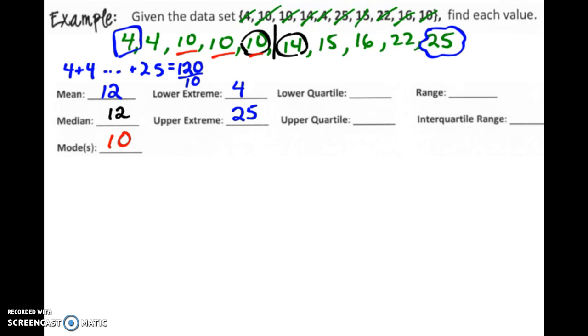And then the lower quartile and the upper quartile, those may be the new ones. So what we're going to look at here, when we're looking at the lower quartile, we just look at the numbers below the median. So 4, 4, 10, 10, and 10. And what we're going to do is we're going to find the median of that data set. So our lower quartile is 10.